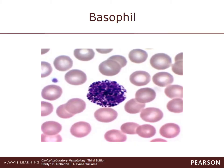Neutrophils, eosinophils, and basophils are collectively called granulocytes because of their prominent cytoplasmic granules, which alter their function and are very specific to their function.